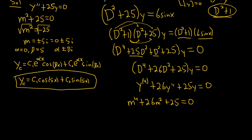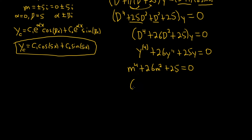This factors nicely — 1 times 25 is 25, so it's (m² + 1)(m² + 25) = 0. Setting each factor equal to zero: m² + 1 = 0 and m² + 25 = 0.